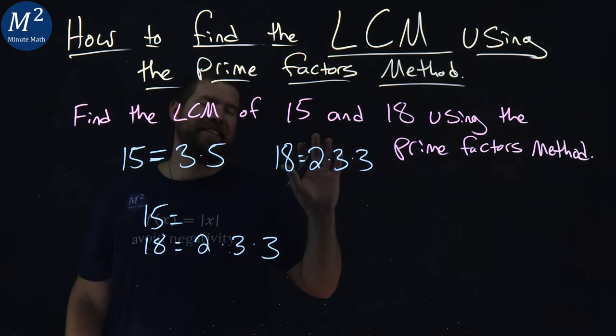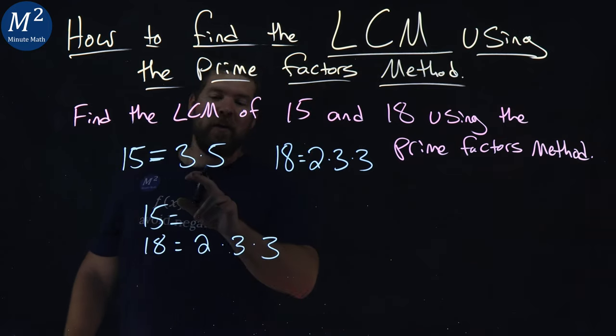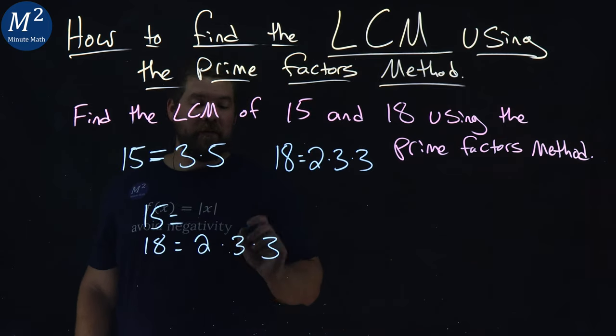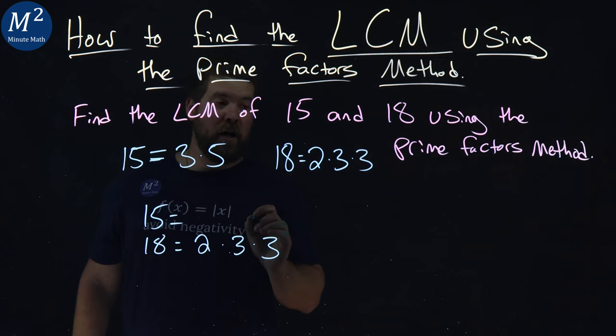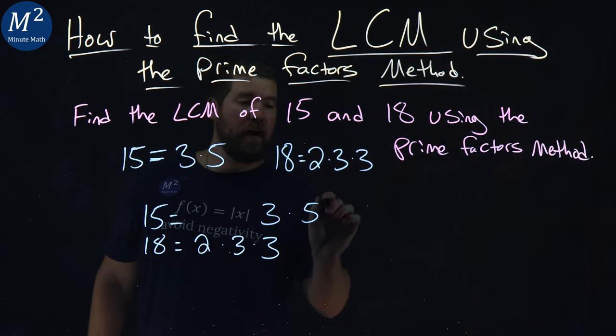Got thrown off by the prime factors of 18. 3 times 5 is 15. So I'm going to write them in a column here, 3 times 5.